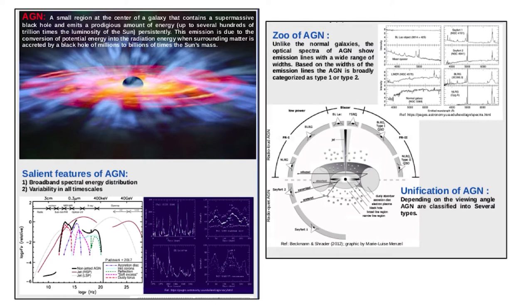On the other hand, the radio quiet AGN consists of a broadband X-ray power law, big blue bump, soft X-ray excess, and reflection components.